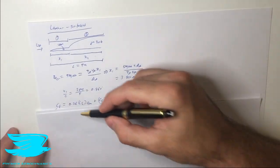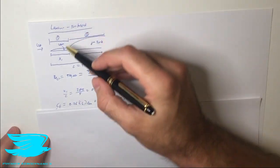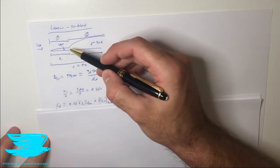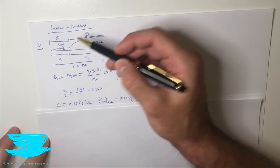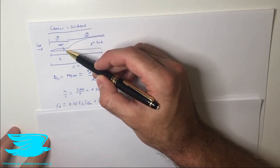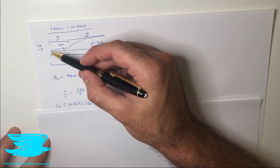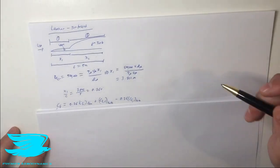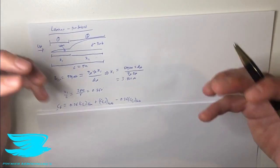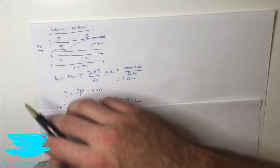You might ask why we have the factor 0.76 here instead of 1. The reason is that the laminar boundary layer is quite thin compared to the turbulent boundary layer. If you were to extend the turbulent boundary layer profile back toward the leading edge, you'd find that it has to start further closer to the leading edge than the laminar boundary layer does. So we substitute 0.76 to cobble together the different laminar and turbulent boundary layer regions and get a good approximation for the drag coefficient.